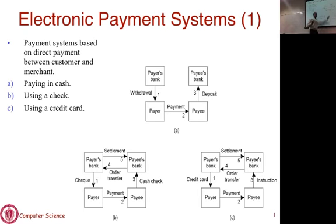If you walk into a store and buy a bottle of soda, you just pay in cash. There is no record of who you are, unlike other forms of transaction. So cash payments can be anonymous — that's something we'll come back to.